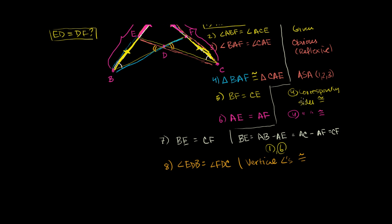Statement nine: triangle BED is congruent to triangle CFD. B is the white angle, E is the unlabeled angle, D is the orange angle — and correspondingly C, F, D. This comes from angle-angle-side congruency: orange angle, white angle, side. Since we've now shown this triangle equals that triangle, we know their corresponding sides are equal.